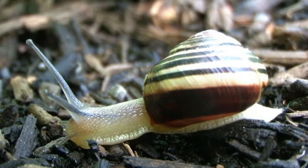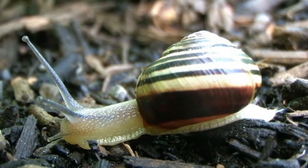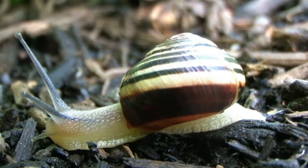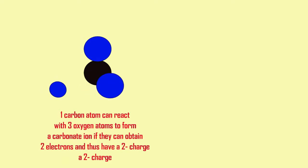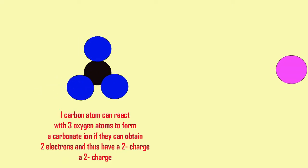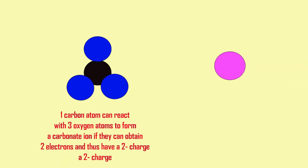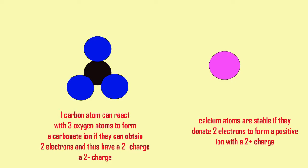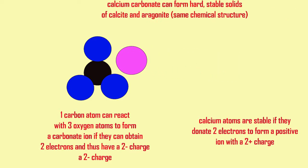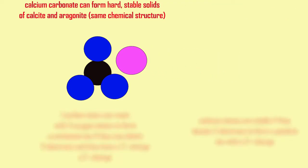Many animals defend themselves by producing a hard outer shell, as does this snail. These shells are often made of calcium carbonate, which is then important in the formation of limestone, one of the most common rocks.